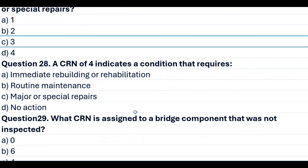Question 28. A CRN of 4 indicates a condition that requires: A. Immediate rebuilding or rehabilitation. B. Routine maintenance. C. Major or special repairs. D. No action. Answer B. Routine maintenance.